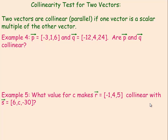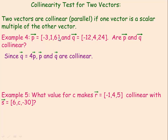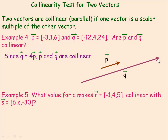The collinearity test for two vectors: two vectors are collinear or parallel if one vector is a scalar multiple of the other. So if p = (−3, 1, 6) and q = (−12, 4, 24), are p and q collinear? Notice that if you multiply p's components by 4, you get q exactly: 4 × (−3) = −12, 4 × 1 = 4, 4 × 6 = 24. So 4 times p equals q, which means p and q are collinear or parallel.